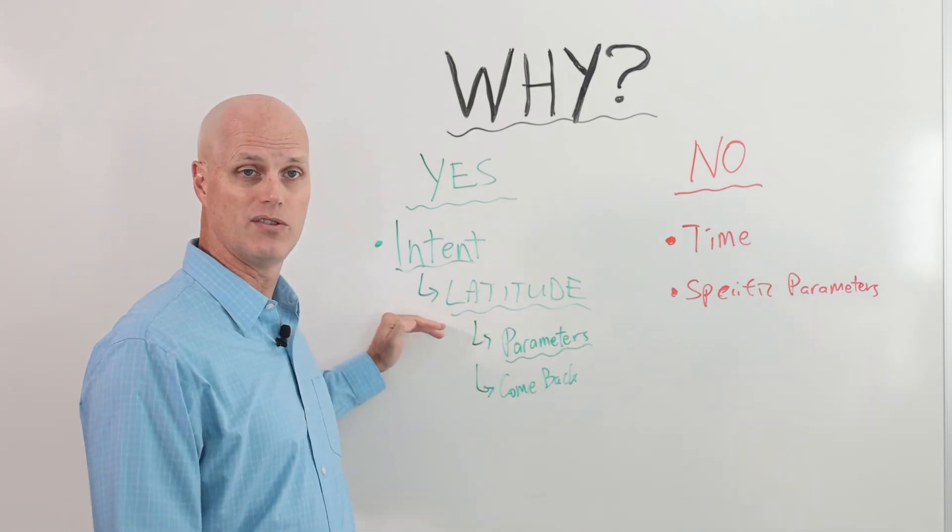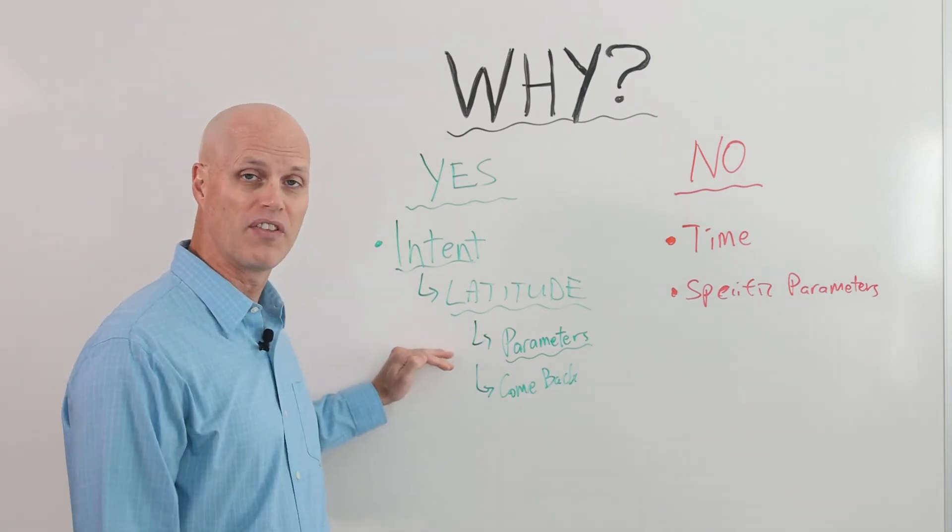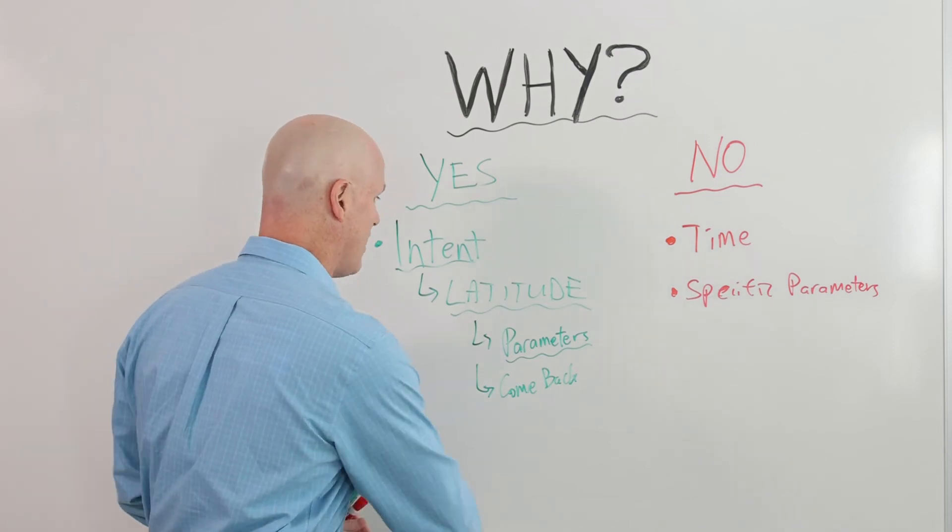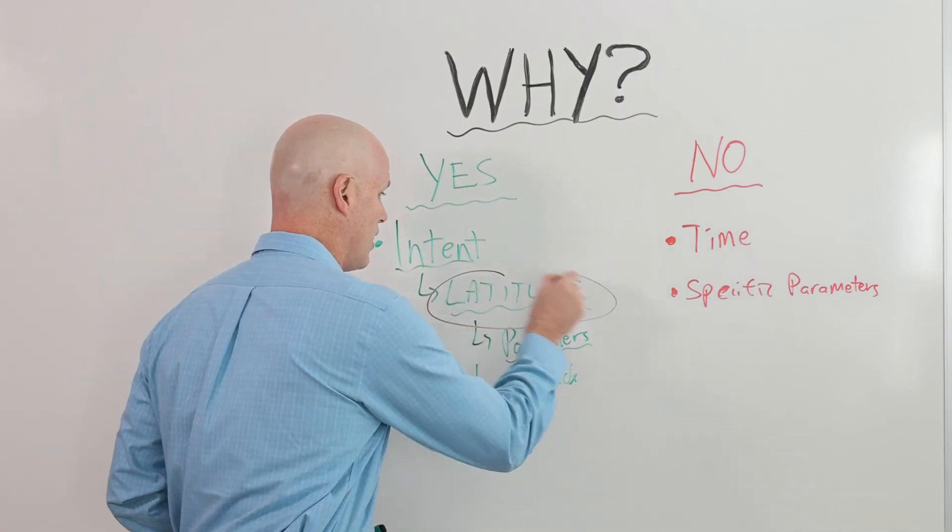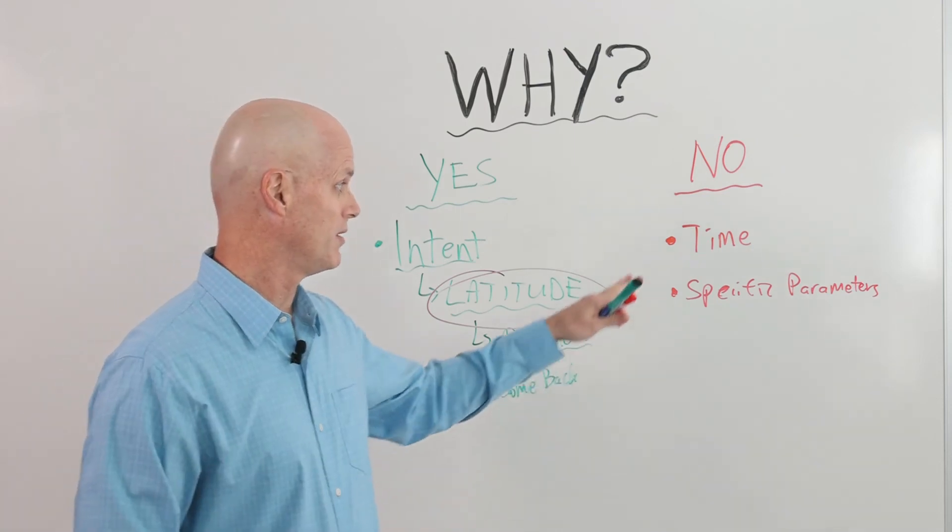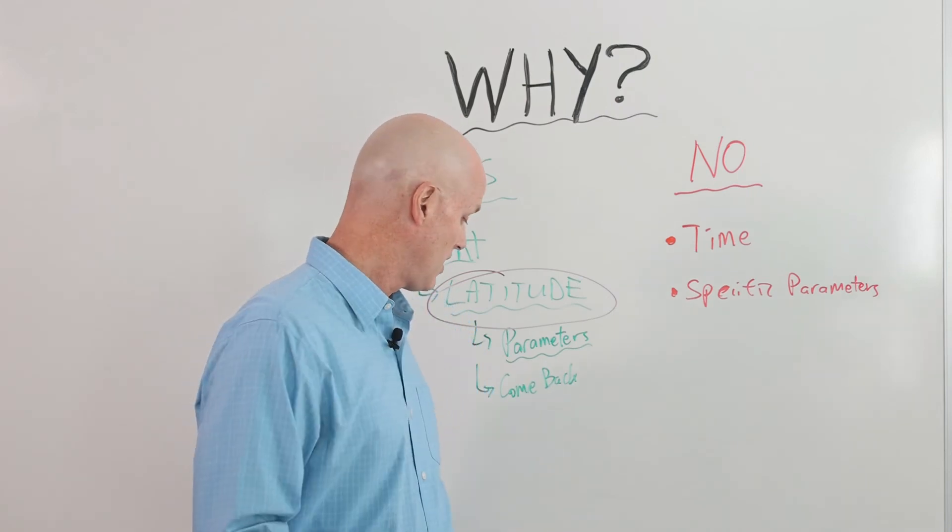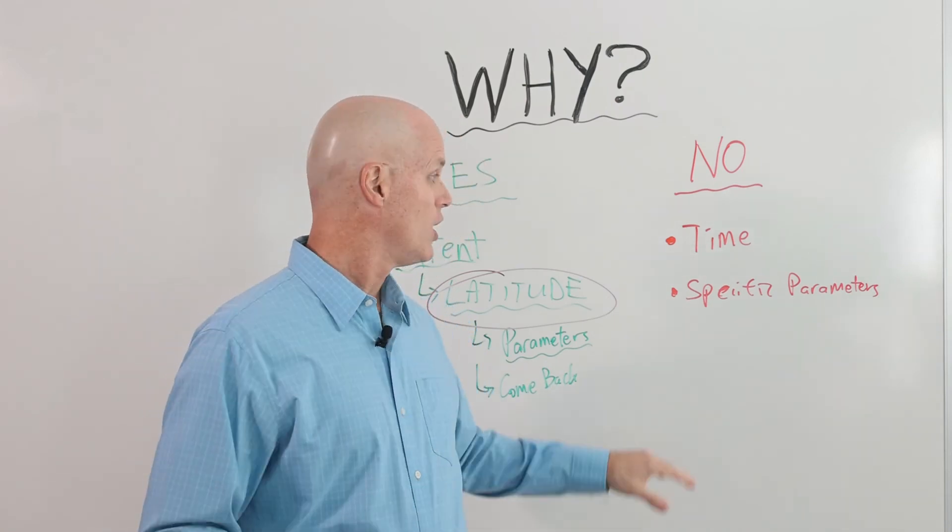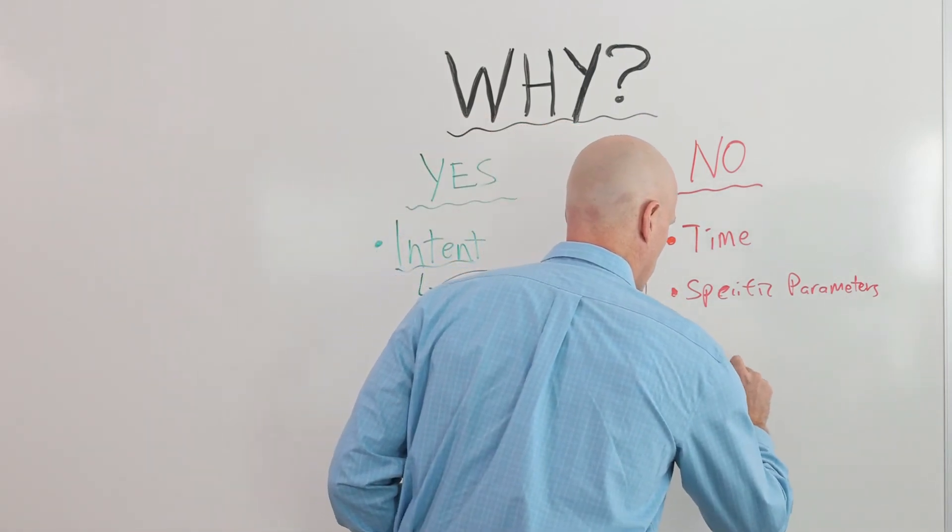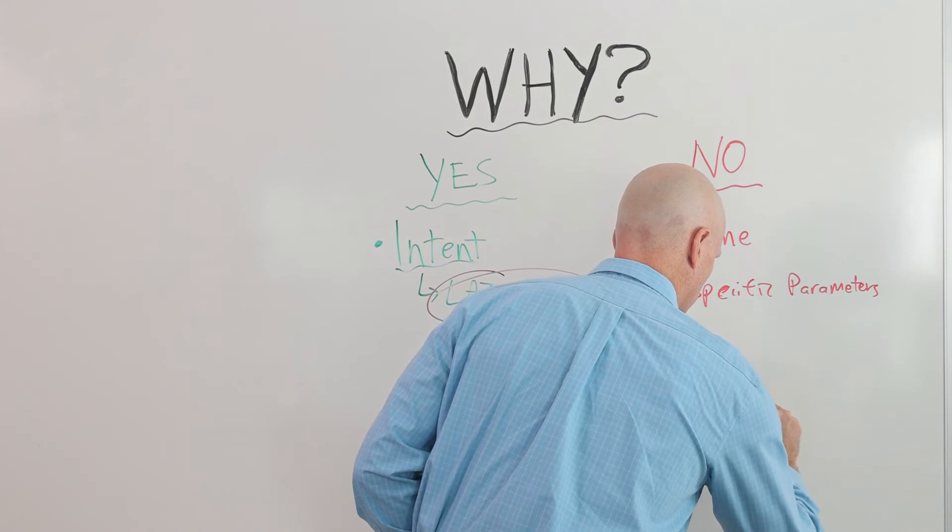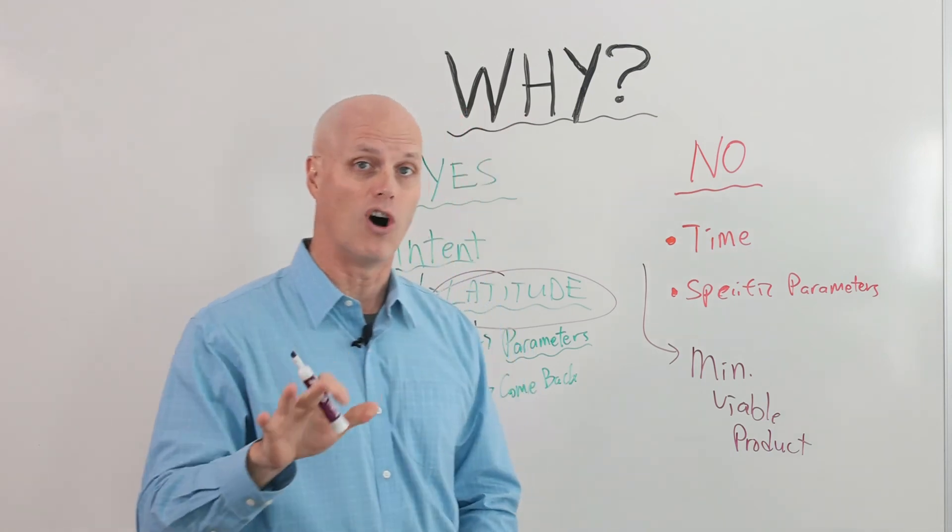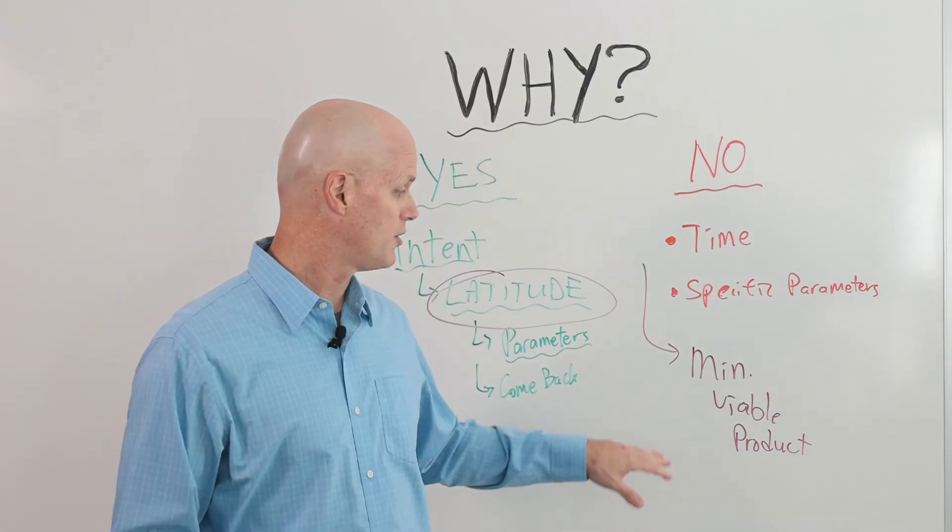If you default to one or the other too much, you can have hidden costs. The costs may be people don't take the latitude, they don't think they have the ability to think creatively because they don't understand enough, or you haven't explicitly told them 'you're going to have some latitude, go ahead and use that if you run into a problem.' Or on the other side, if you consistently don't give them any information, you're going to probably get minimally viable products.